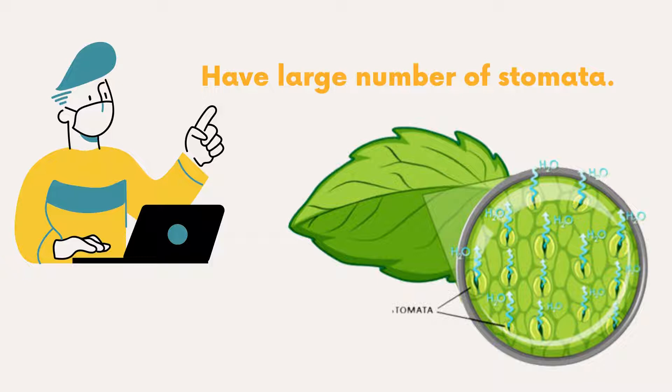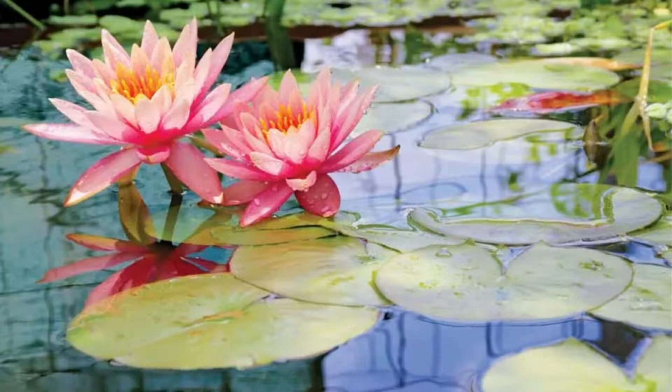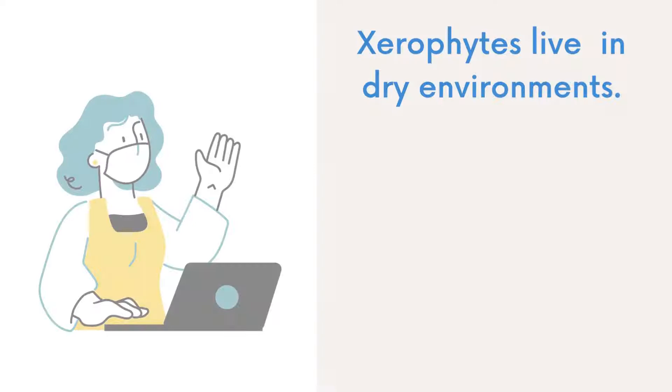Their upper epidermis has many stomata, which increases transpiration. If we talk about examples of hydrophytes, these include plants like water lily.